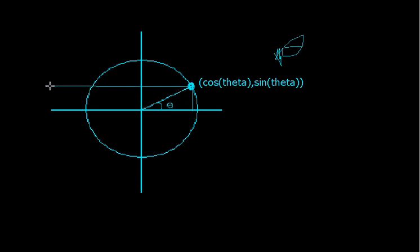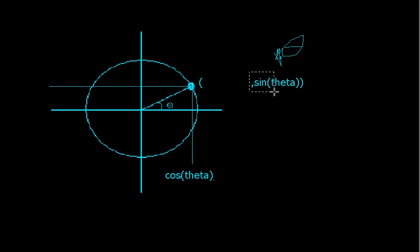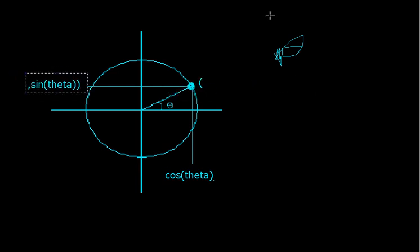So this right here — that's cosine of theta — and this is sine of theta. That's what they are. That's what that height is. So when you see sine of theta, think: that's the height of that point on the circle.